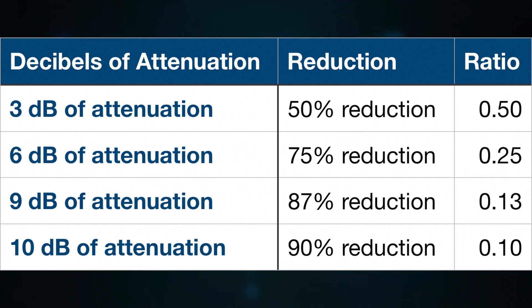Three decibels of attenuation is equal to 50% reduction, which leaves you with a ratio of 0.5. Six decibels of attenuation is equal to 75% reduction, which leaves you with a ratio of 0.25. Nine decibels of attenuation is equal to 87% reduction, which leaves you with a ratio of 0.13. And ten decibels of attenuation is a 90% reduction, which leaves you with a ratio of 0.10.